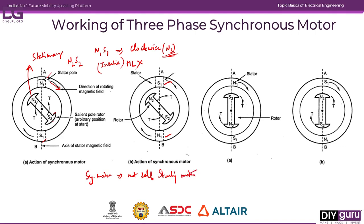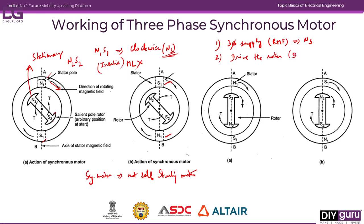Some modification is needed to rotate the rotor to come into contact with the stator poles so that magnetic locking takes place. Once magnetic locking takes place, the rotor will rotate at the speed of the rotating magnetic field. The procedure to start: first, give a three-phase supply to the stator to produce the rotating magnetic field. Second, drive the rotor by some external means — such as a diesel generator or a small auxiliary motor.